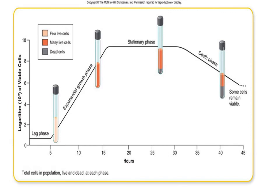The death phase is when the number of cells dying is greater than the number of cells being produced. This is due to the accumulation of metabolic waste as the bacterial population becomes very large. The metabolic waste causes a change in environmental conditions that inhibits the process of bacterial growth.